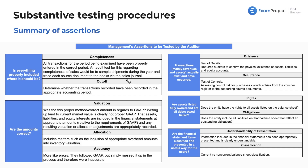Tracing makes sense for completeness because you're making sure that everything is properly included — checking all documentation and making sure it's reflected. Next, we have cutoff, which is determining whether transactions recorded have been recorded in the appropriate accounting period. We've talked about this with bank cutoff statements for cash and pretty much every account.